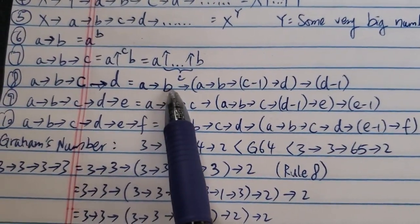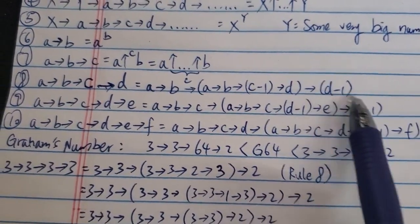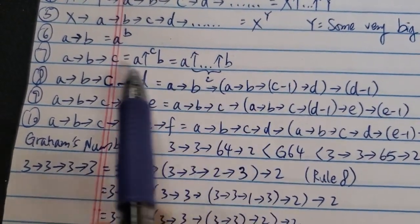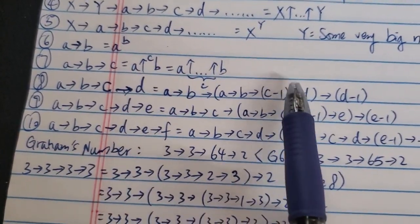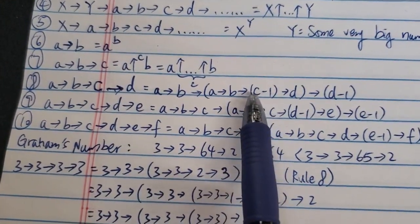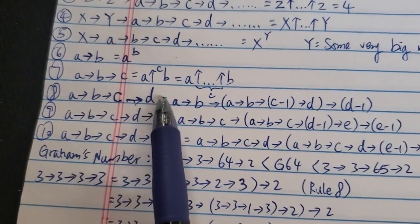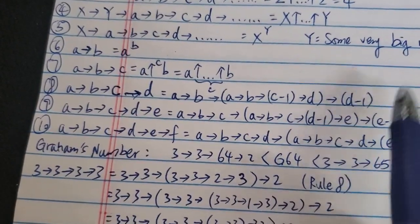A→B→C→D, this is the four entry rule, it's just equal to A→B→(A→B→(C-1)→D)→(D-1). So you can pause the video if you don't understand it. So basically, you just tick C and replace C with the whole chain. And inside that chain, you just put C-1, and then at the end, you'll minus 1 from D. Feel free to pause the video again. And I think it's pretty straightforward, actually.